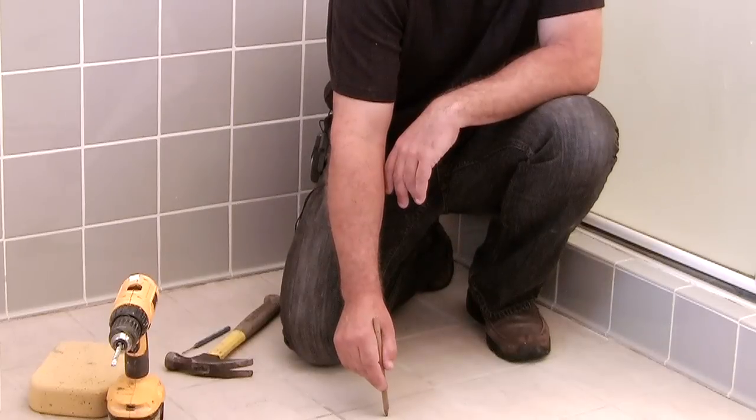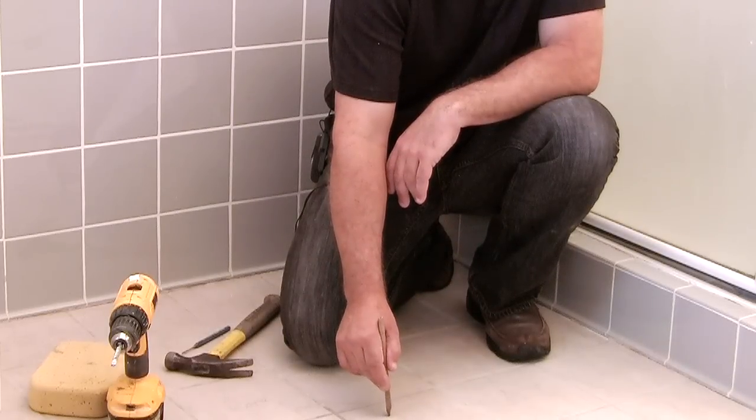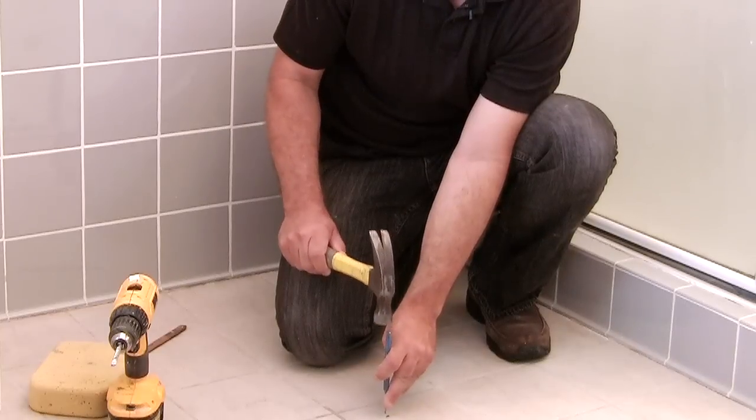So what you'll do is take your hammer and your nail punch, and where you've already marked the tile for your hole, you will lightly tap with the hammer just enough so that you put a little score mark on the tile. This will help you steady the drill bit in its place so it doesn't go dancing around on the floor and it actually puts the hole where you want it to be.